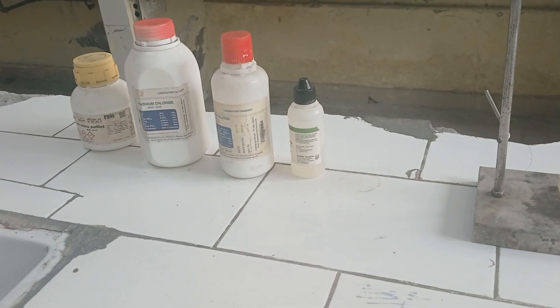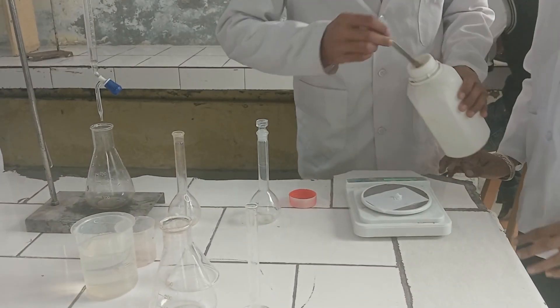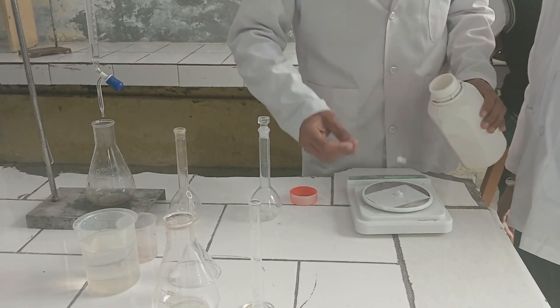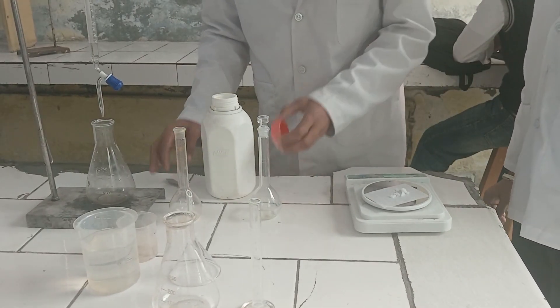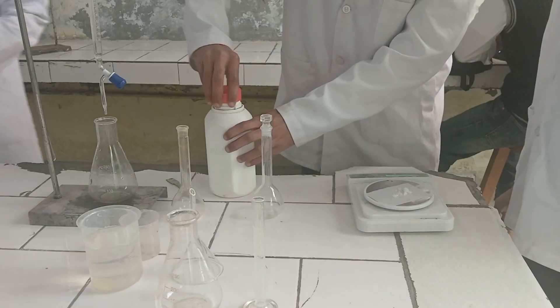Here are the chemicals and glass wares. First, we have to weigh 0.1 gram of ammonium chloride and transfer it to the volumetric flask. Then make up the volume.